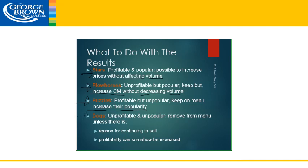Lastly, what to do with our dogs. These are unprofitable and unpopular. We can take these off the menu, but there are a couple of reasons why we wouldn't — if we could with reasonable certainty increase the profitability somehow. If you could decrease the cost while keeping the price the same, this would turn it into a puzzle because it would make it more profitable. Also, if this was the only vegan or vegetarian item on your menu, you would want to continue to sell it.